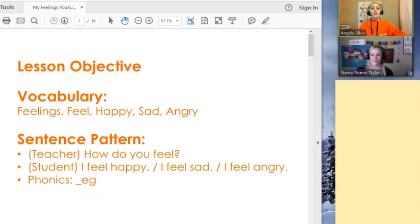So the first slide you will see will show you the objectives. So this is what we are teaching. We are teaching the vocabulary words feelings, feel, happy, sad, and angry. And the sentence patterns that we are teaching the student are how do you feel, I feel happy, I feel sad, I feel angry, and then the phonics that we are teaching is egg. We are blending with that word. So let's go to our first slide.